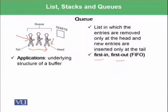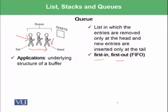In computer science, one underlying application of a queue is the buffer, which helps move data from one location to another. If the sender has more speed or the receiver is not receiving information efficiently, that information can be buffered — stored temporarily between the two locations — and a queue can be used to implement this.